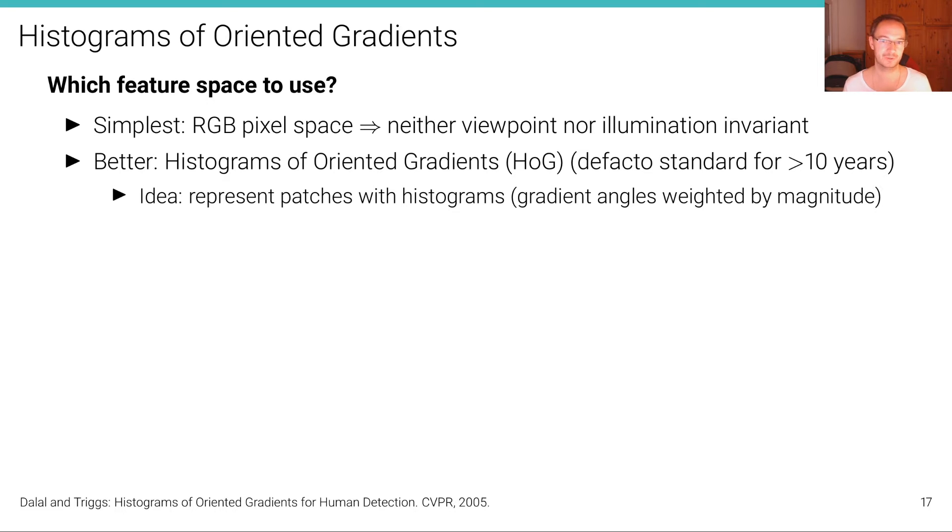A better choice would be to use a so-called histogram of oriented gradients, or in short, HOG, which was the de facto standard for more than 10 years of research in object detection. It was popularized by this paper from Dalal and Triggs called Histograms of Oriented Gradients for Human Detection. The idea here is to represent patches with histograms which are representing gradient angles weighted by the gradient magnitude.